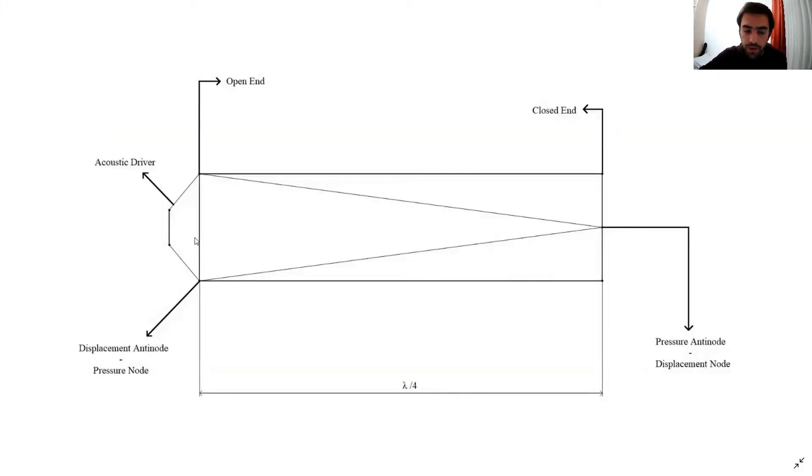We have a one-end open resonator tube and we drive the tube at its fundamental resonance frequency by a speaker located at the open end of the tube. The appearance of the displacement wave is as shown. The displacement antinode is at the open end where the speaker is, and the displacement node is at the closed end.